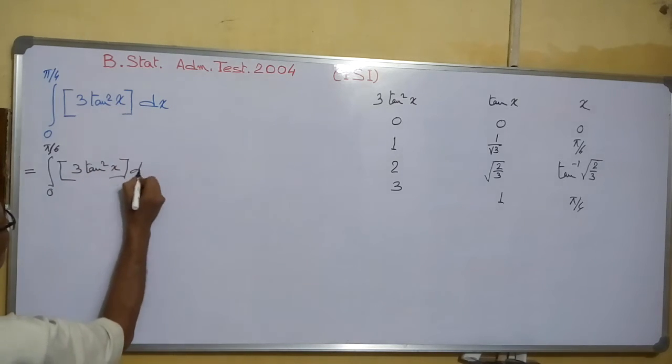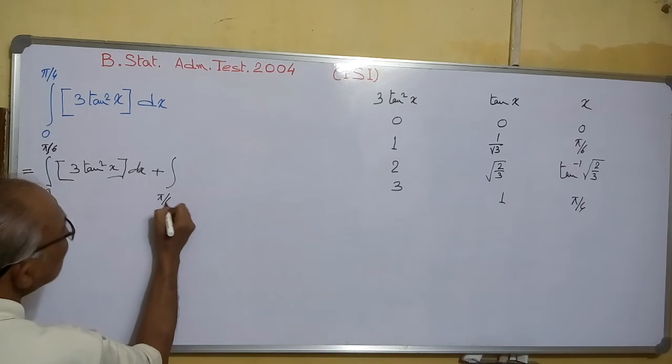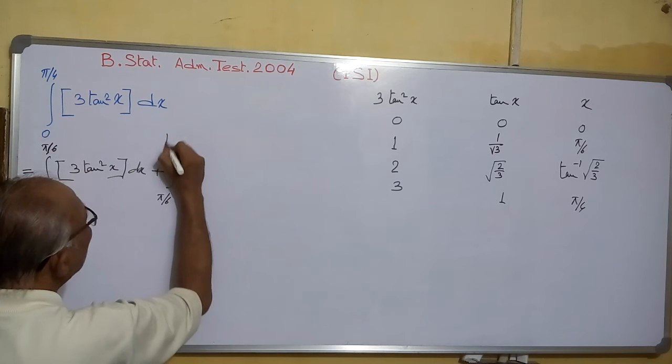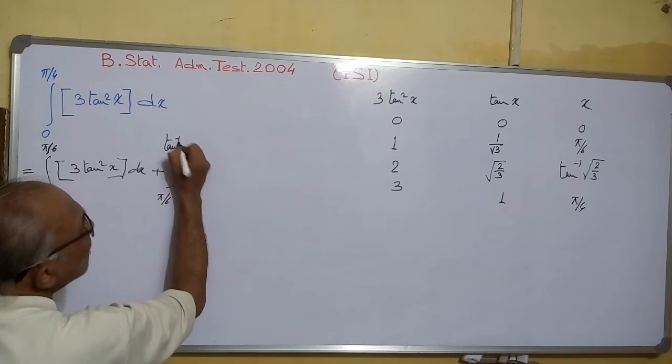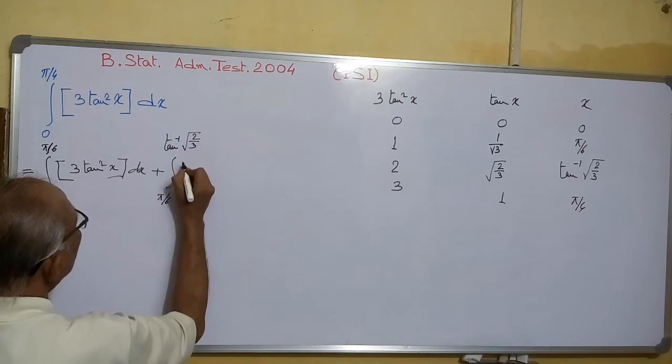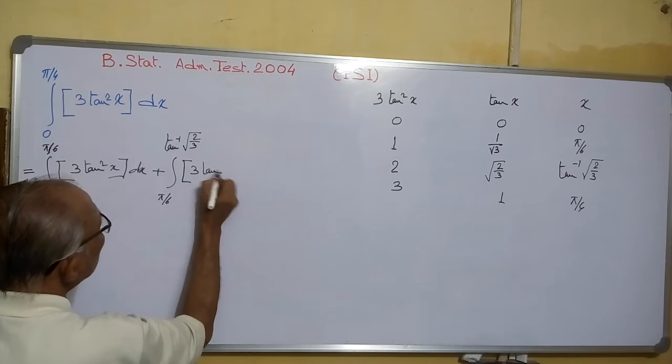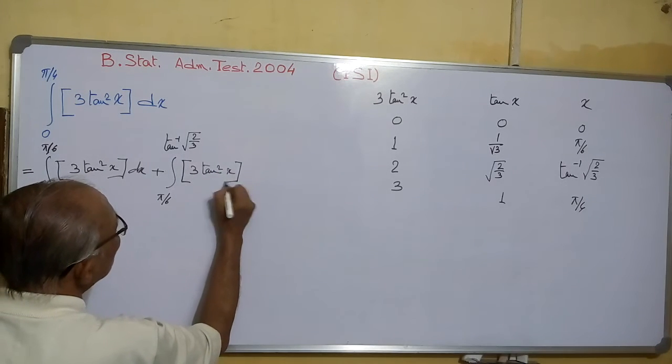Plus π/6 to tan⁻¹(√(2/3)), again it is 3tan²x dx.